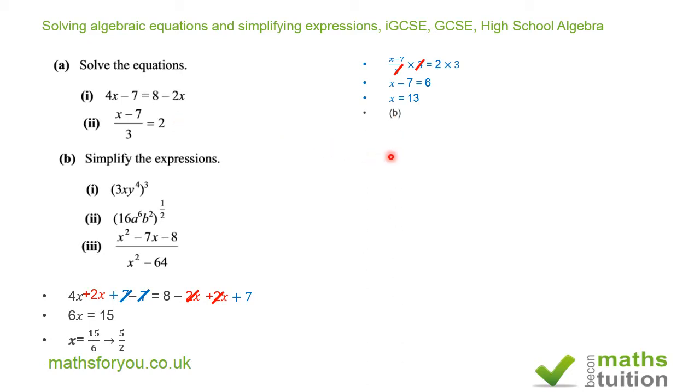For simplifying (3xy⁴)³, by the law of indices we multiply the exponents by 3. 3³ = 27, x¹ becomes x³, and y⁴ becomes y¹² because 4 × 3 = 12. The answer is 27x³y¹².